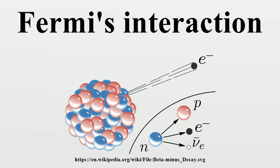In particle physics, Fermi's interaction is an explanation of beta decay, proposed by Enrico Fermi in 1933. The theory posits four fermions directly interacting with one another at one vertex. For example, this interaction explains beta decay of a neutron by direct coupling of a neutron with an electron, an antineutrino, and a proton. Fermi first introduced this coupling in his description of beta decay in 1933.